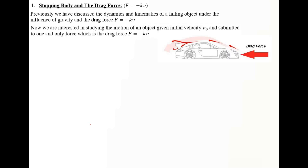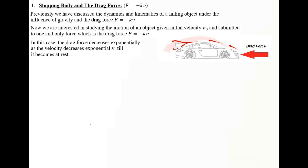In the previous video, we discussed the dynamics and kinematics of a falling object under the influence of gravity and the drag force, so we had two forces acting on the object. Now we are interested in studying the motion of an object given an initial velocity V0 and subjected to one and only force, which is the drag force. In this case, the drag force decreases exponentially as the velocity decreases exponentially until the object comes to rest.